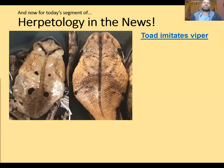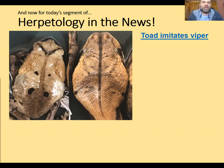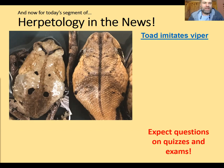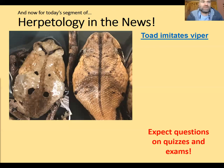Let's start off with the herpetology in the news segment. This is a toad in Africa that researchers speculate — they don't have total evidence — but they speculate that its morphology, its color and shape, is mimicking a highly dangerous and venomous viper. The idea is that the color pattern and shape of this toad's body mimics the head of the viper, so that a potential predator — a primate or a bird — will look at the toad quickly and think it's a snake and avoid it, knowing the snake's appearance signals danger.